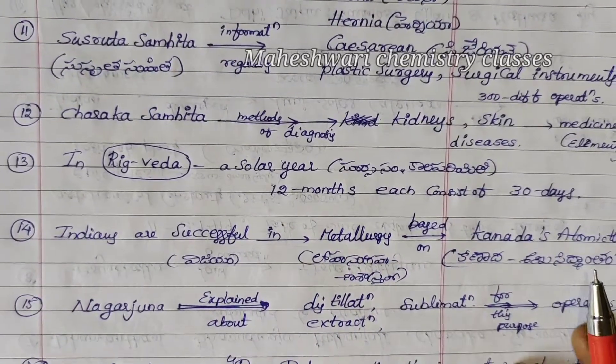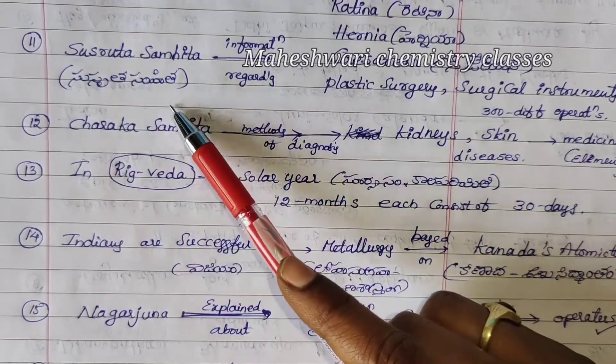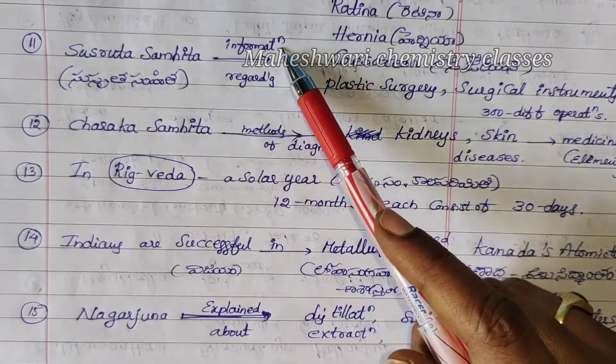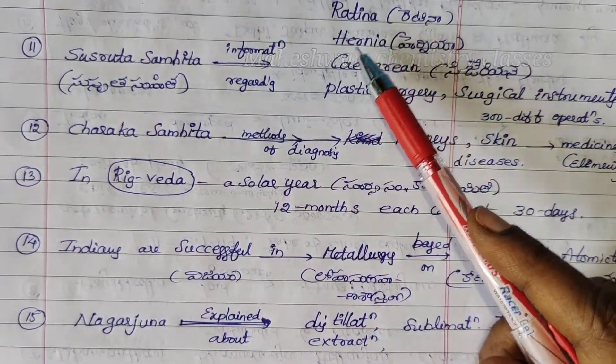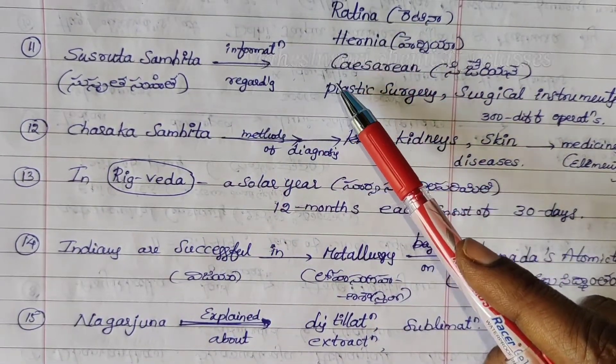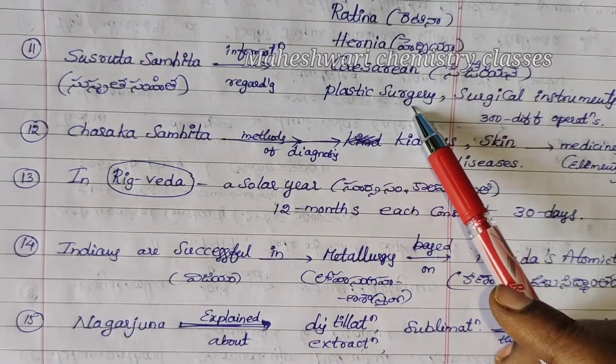Eleventh point: Sushruta Samhita contains information regarding the Retina, Hernia, Caesarean section, and Plastic Surgery.